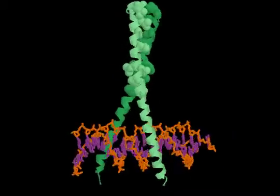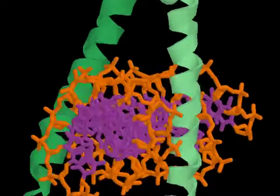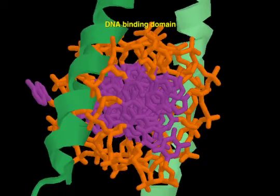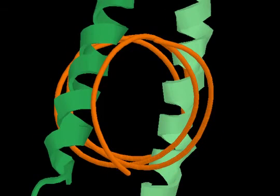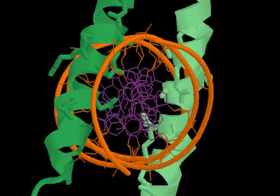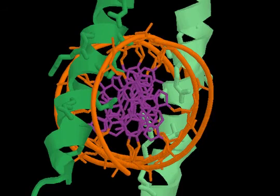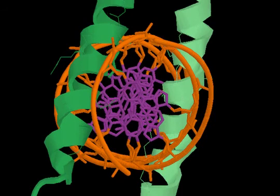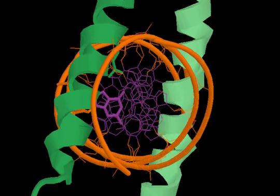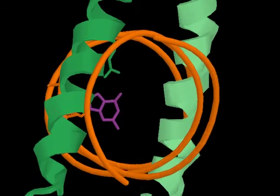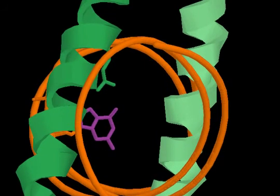Extensions of the two leucine zipper helices straddle the DNA major groove. Side chains from both helices extend into the groove to contact DNA bases. The specific interactions between side chains and bases are hydrogen bonds. In this example, an arginine residue makes two contacts with a guanine base.